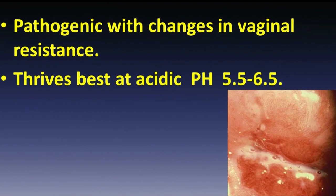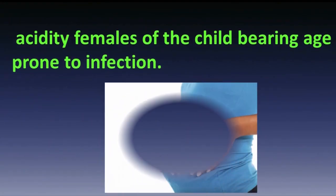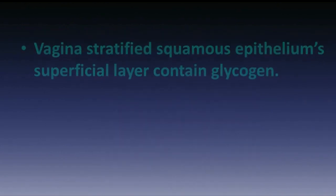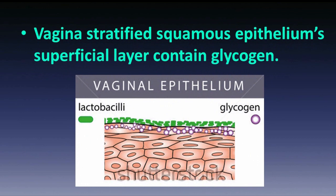Pathogenicity involves changes in vaginal resistance. The organism thrives best at an acidic pH of 5.5-6.5. Females of childbearing age are prone to infection because the vaginal stratified squamous epithelium superficial layer contains glycogen.